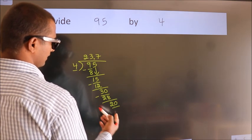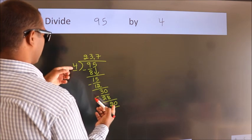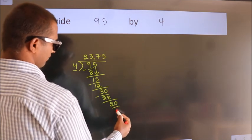So, 20. When do we get 20? In 4 table. 4 fives, 20.